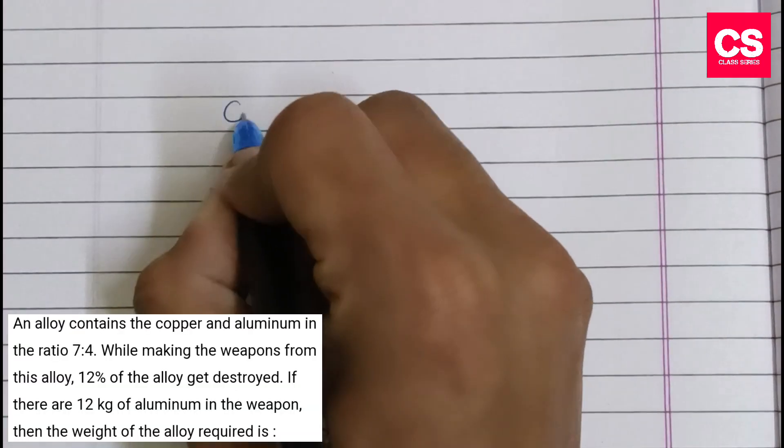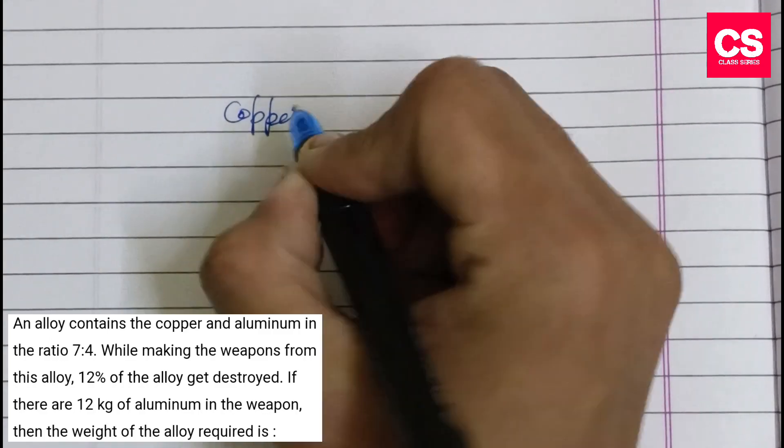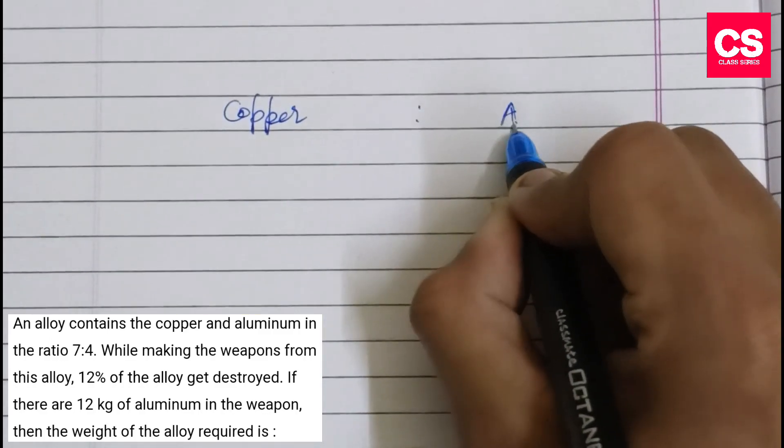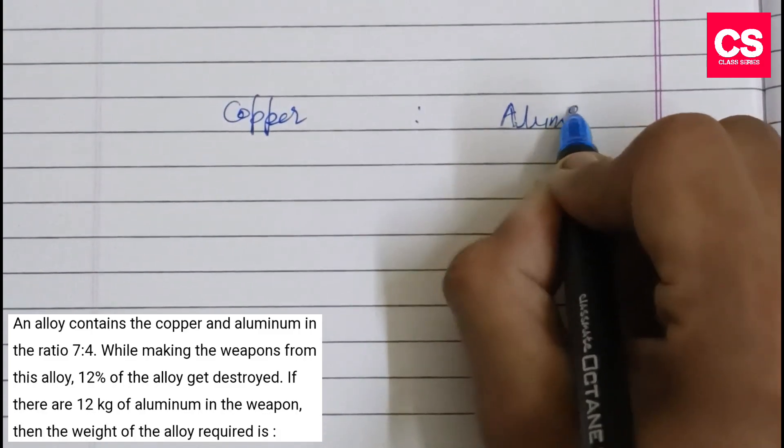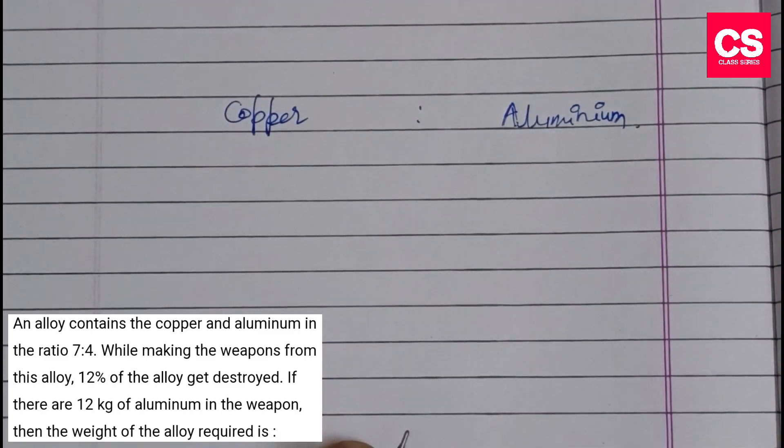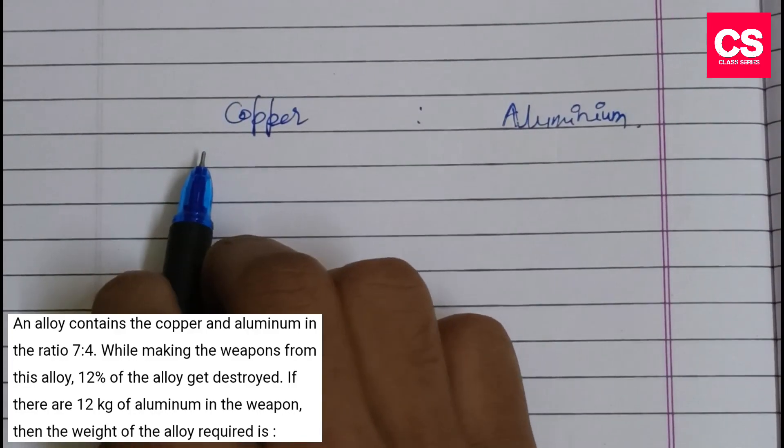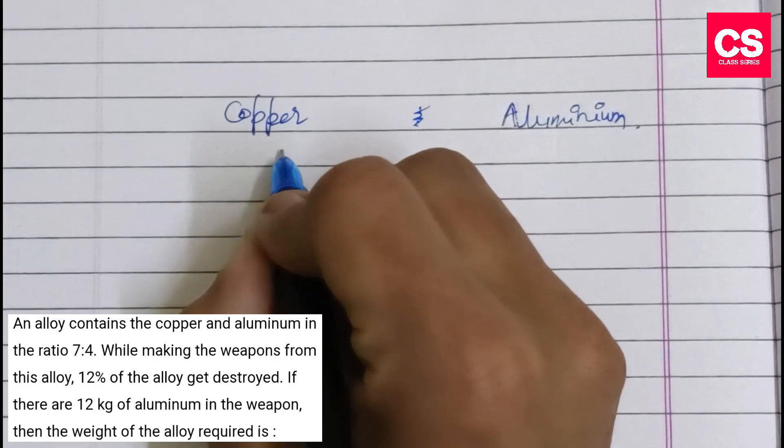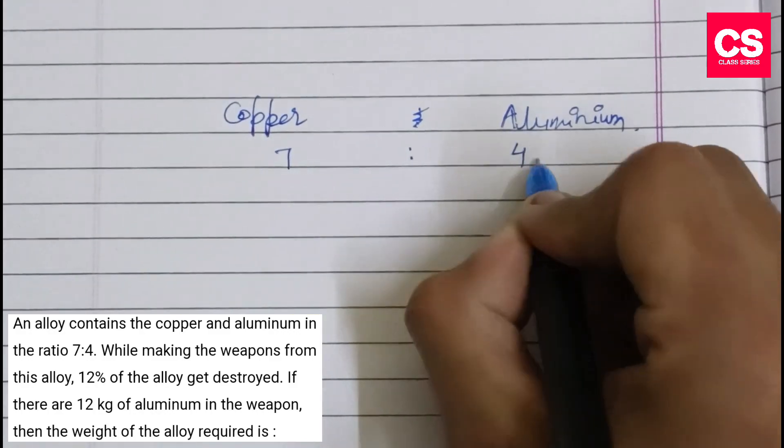We'll make two columns: copper and aluminum. The ratio is 7:4, so we write 7 for copper and 4 for aluminum.